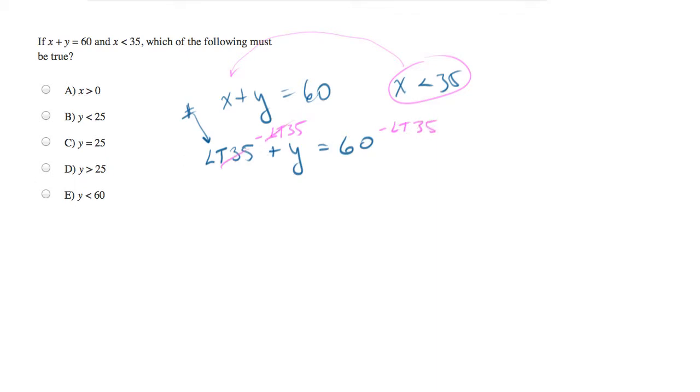And let's see what's left. We'll end up with y is 60 minus less than 35.